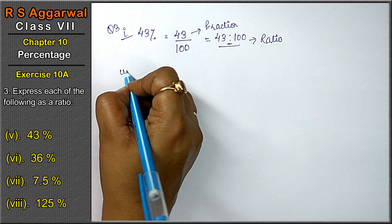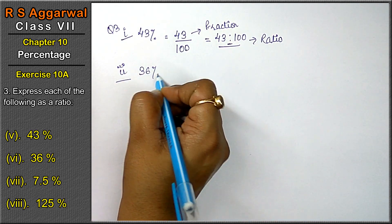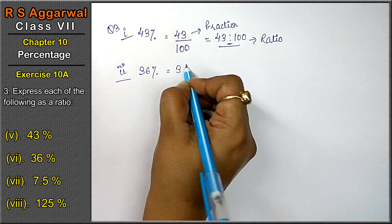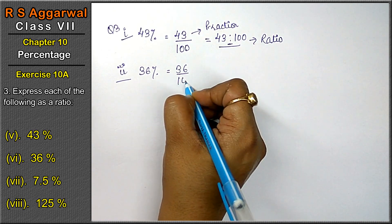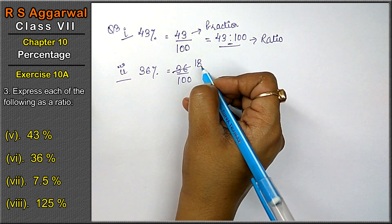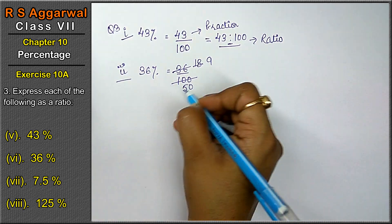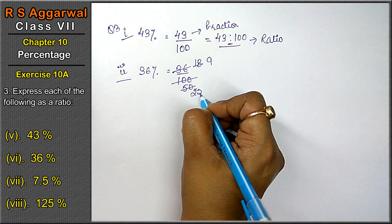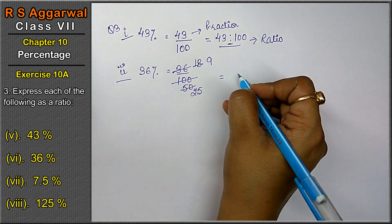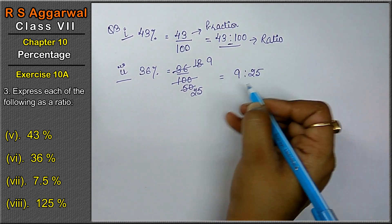Let's do next part. 36%. Percentage ka sign hattane ke liye 36 upon 100. 2 ones are 2 to 2. 8's are 16. Now 50. 2 9's are 18. 25 into 25 is 50. Then the ratio is 9 is to 25.